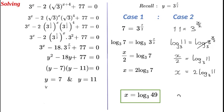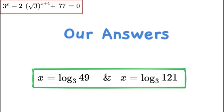We can write x equals log base 3 of 11 to the power of 2, and we know that 11 squared is 121. Finally, our answers for this challenging exponential equation are: x equals log base 3 of 49, and x equals log base 3 of 121. I hope you enjoyed this video — don't forget to subscribe and give it a thumbs up. See you again very soon with the next video.